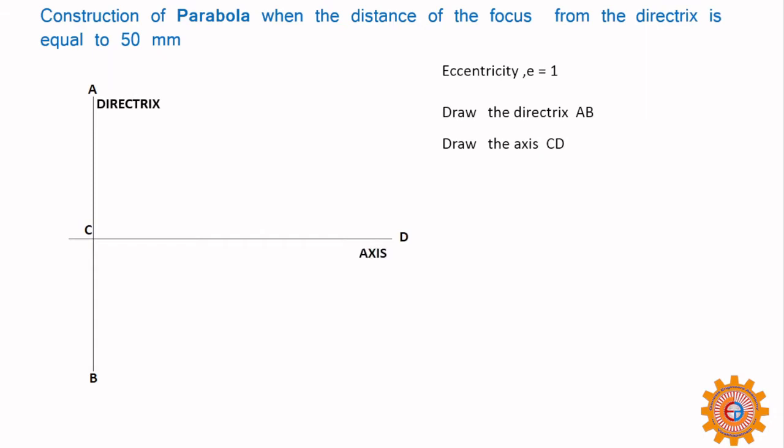On this axis we will have one point called focus. This focus from C is 50 mm. So this is F. F is the focus distance from the directrix.